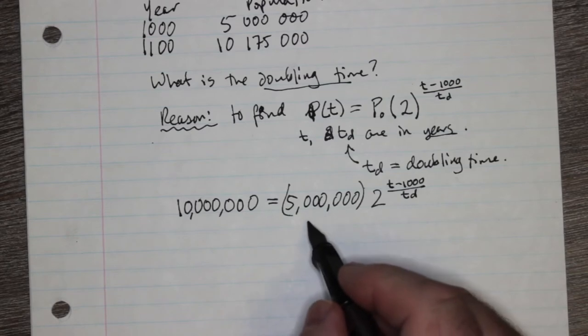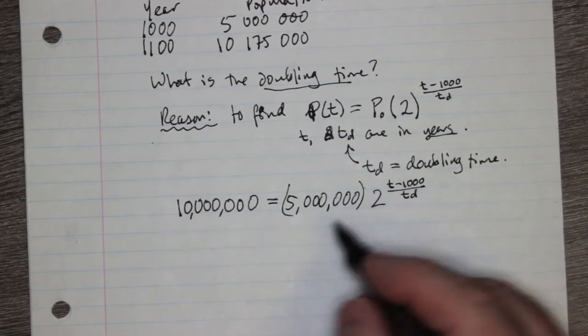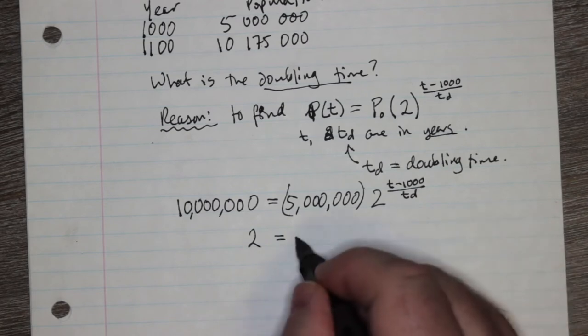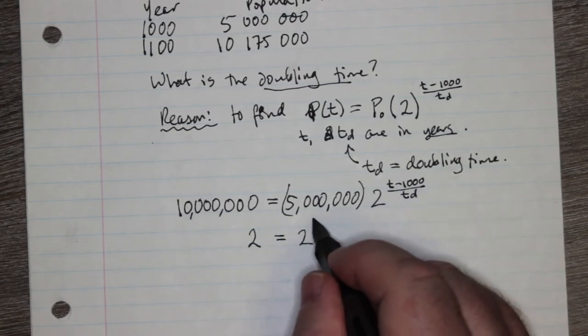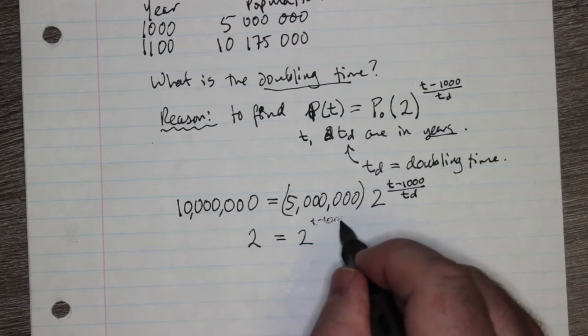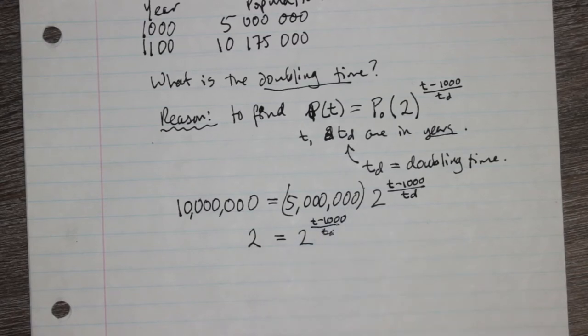I can divide both sides by 5 million and put that here. Well, 10 million divided by 5 million is 2. So what's left on this side is 2 to the t minus 1,000 over the doubling time, td.